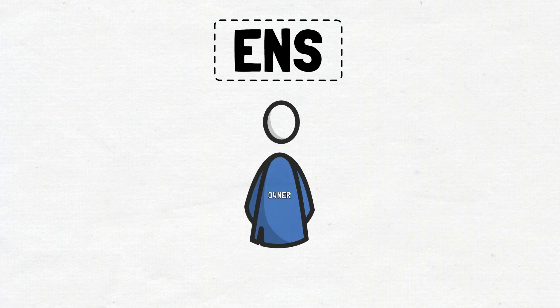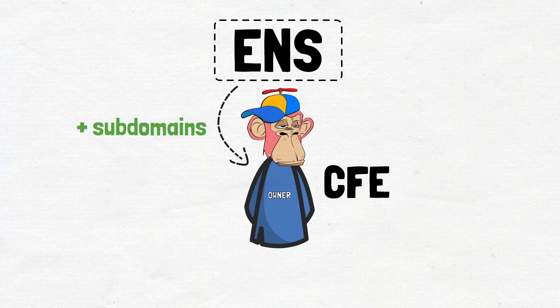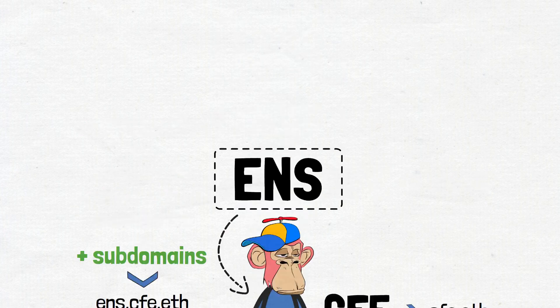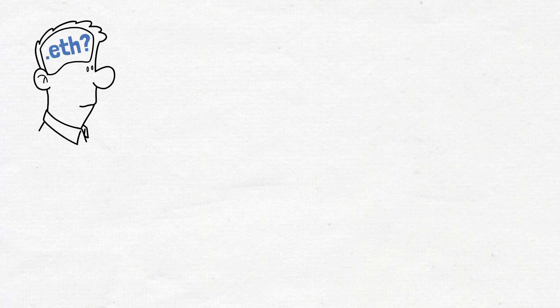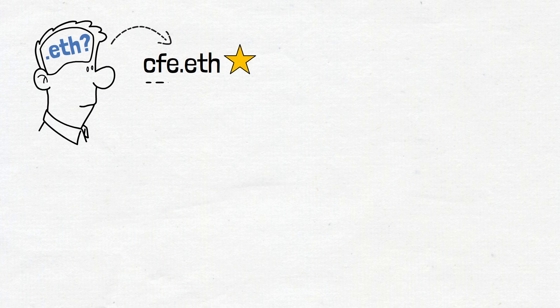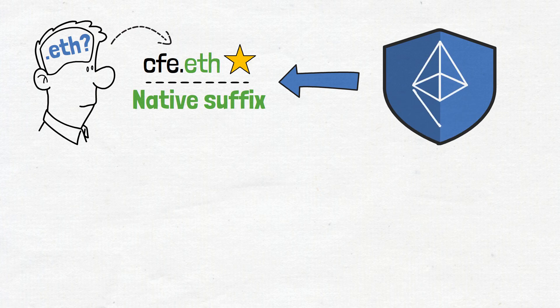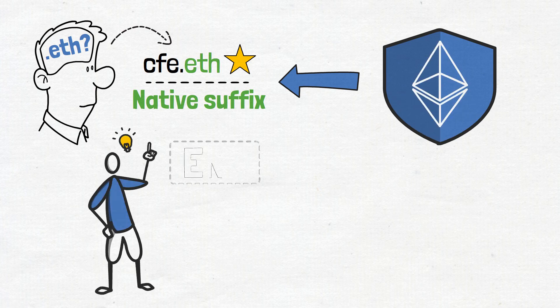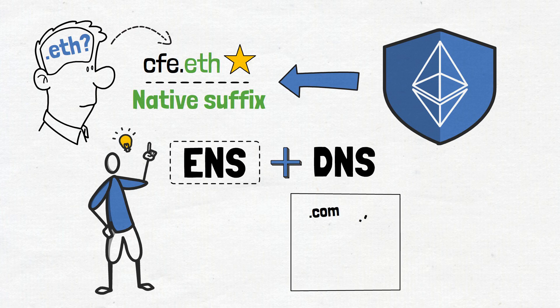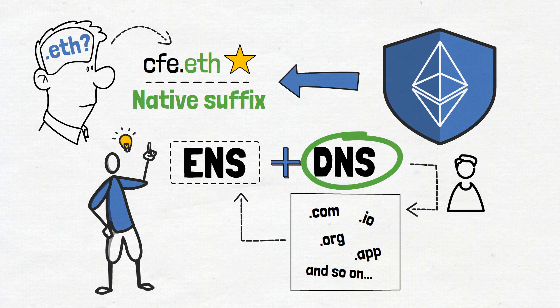The Ethereum name service also allows the owner of a domain to have or control subdomains. For example, if I shorten Crypto Finally Explained to CFE and have a domain called cfe.eth, I can also create and manage subdomains like ens.cfe.eth or explainer.cfe.eth. At this point in the video, you may wonder what .eth means. In a nutshell, it identifies the top-level domain, also known as the native suffix. The .eth suffix gives the domains all of the underlying security of the Ethereum network. However, it is also worth noting that ENS also supports DNS names like .com, .io, .org, .app, and so on. That said, the mentioned suffixes can be used for ENS domains only if the person registering it already owns the DNS name with such an index.